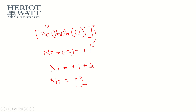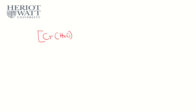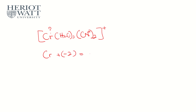Let's do another example. [Cr(H2O)2(CN)2]⁺. Water is neutral, so ignore it. CN is 1−, and we have two, giving −2. The overall charge is +1, so: Cr + (−2) = +1, meaning chromium = +3. That's how you calculate oxidation numbers for metal ions in complex ions. That's it for the naming of complex ions.